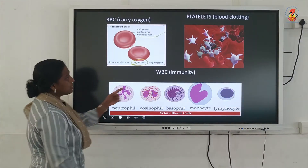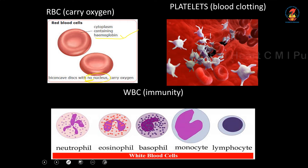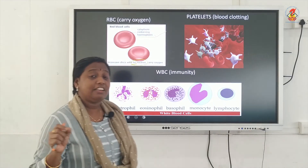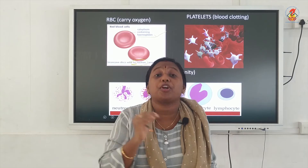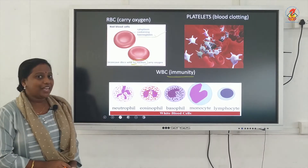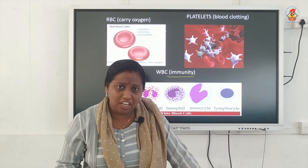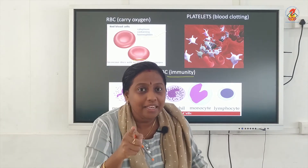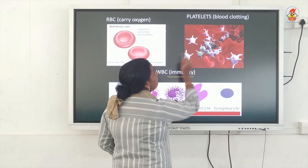The second type of blood cell is the WBC. WBCs are of different types: neutrophils, eosinophils, basophils, monocytes, and lymphocytes — you can get a variety of WBCs. The main function of WBC is: whenever an infectious agent enters your body, the WBC will go and fight with it and protect your body. So WBC provides immunity to your body. To recap: RBCs help in the transport of oxygen, and WBCs help in giving immunity to your body.